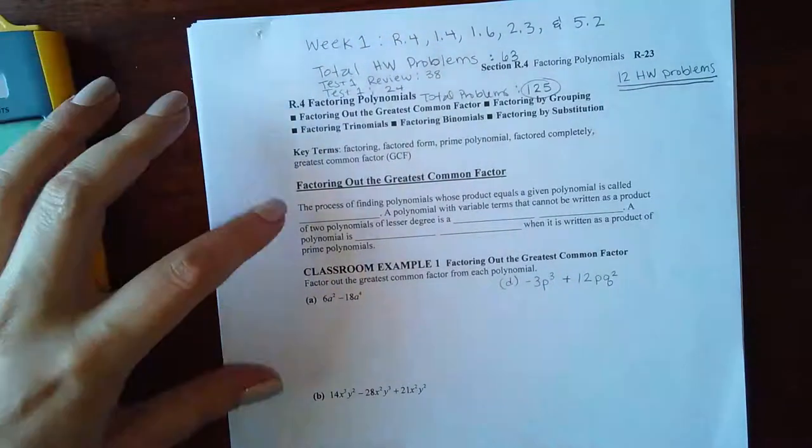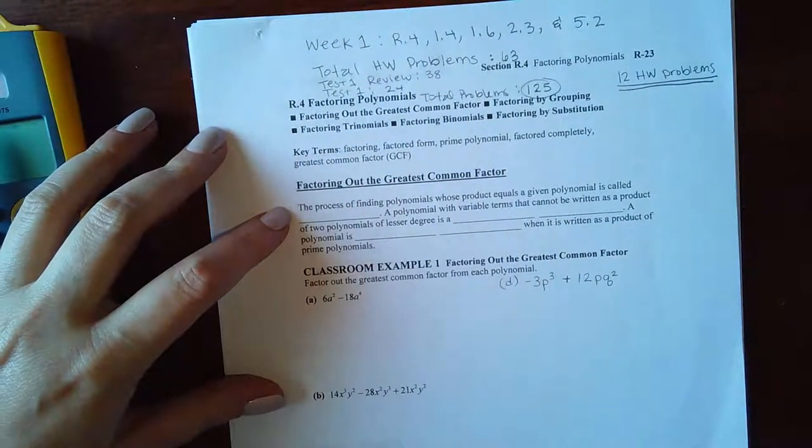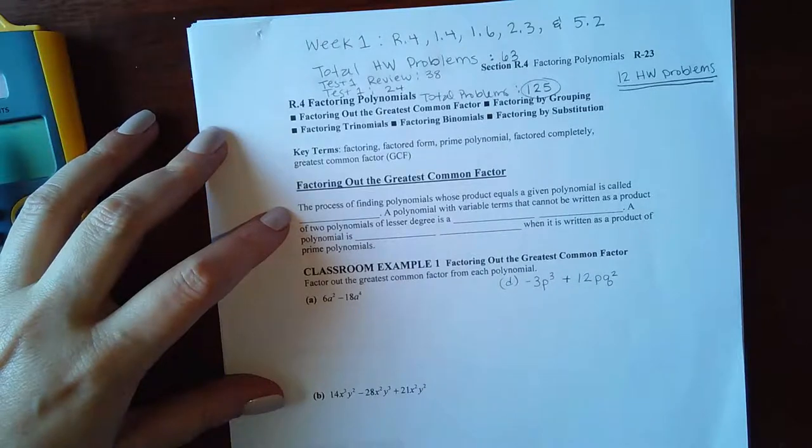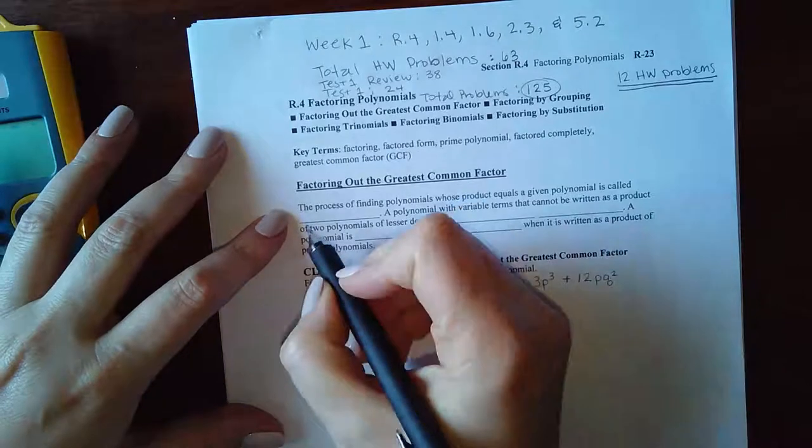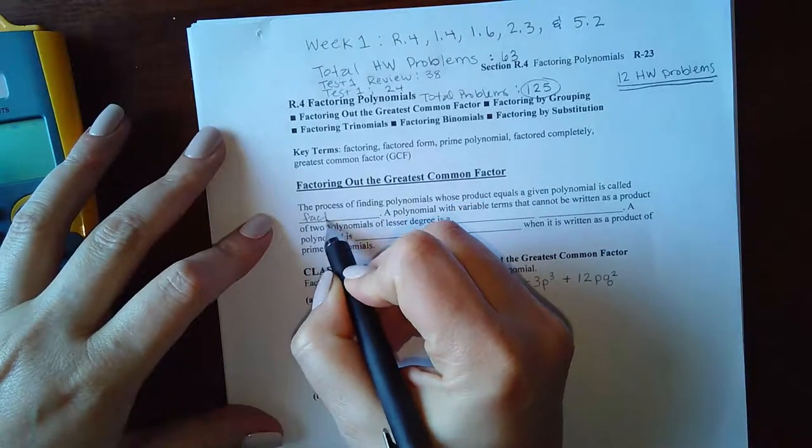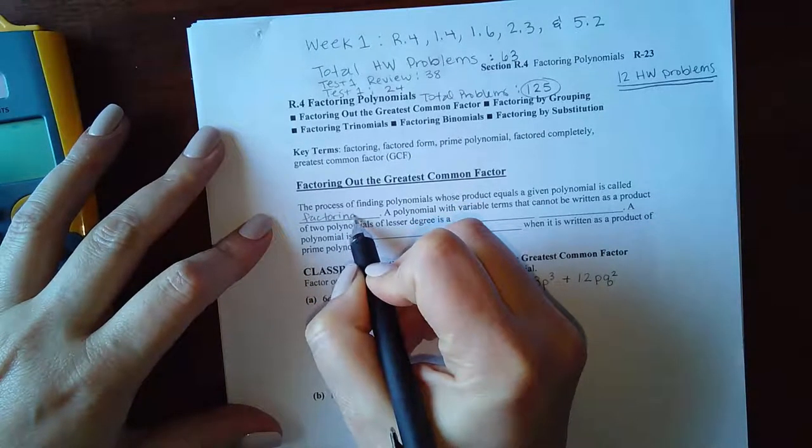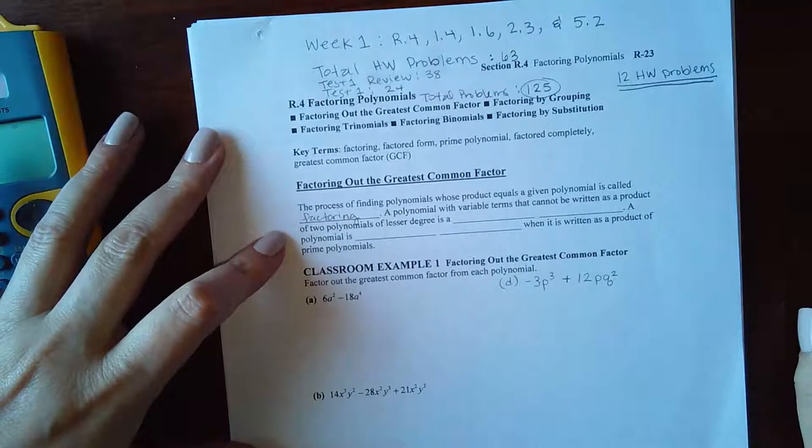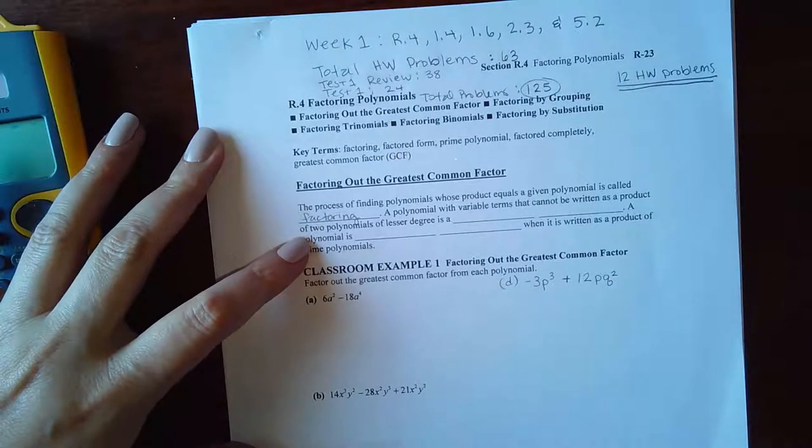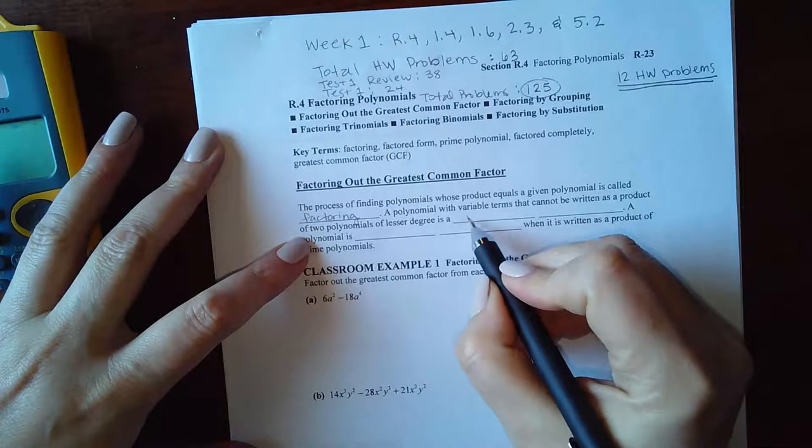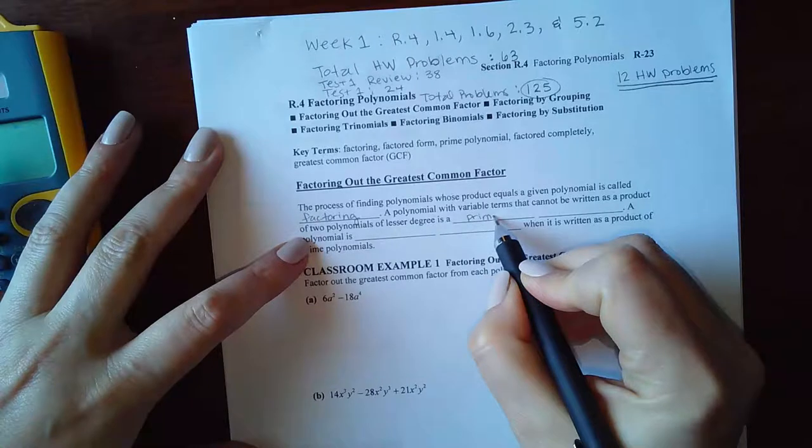It says the process of finding polynomials whose product equals a given polynomial is called factoring. A polynomial with variable terms that cannot be written as a product of two polynomials of lesser degree is a prime polynomial.